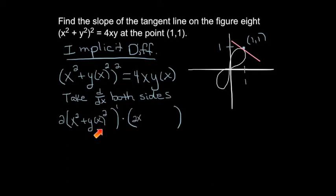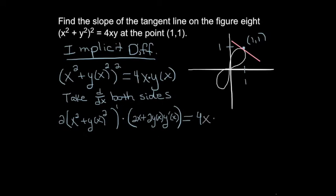The derivative of y of x squared is a chain rule: bring the 2 down for the outside derivative, then multiply by the derivative of the inside function y of x, which is y prime. For the right-hand side, treat 4x times y of x as a product. Using the product rule — 1d2 plus 2d1 — the first function is 4x, the derivative of the second is y prime, plus the second function y times the derivative of the first, which is 4.